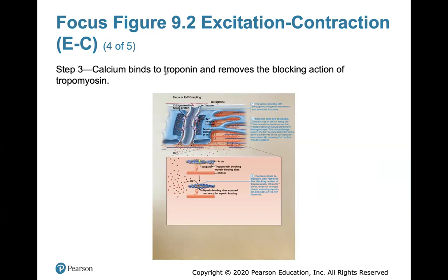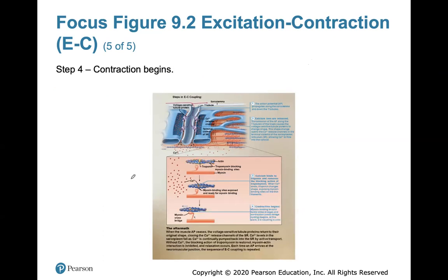Calcium then binds to troponin — the yellow protein on the actin — which removes the blocking action of tropomyosin. Tropomyosin are long spaghetti-like strands blocking the myosin binding sites on the actin. When calcium binds to troponin and removes that block, the myosin heads can reach up and bind to the actin because the sites are free. When the myosin heads bind to the actin, that forms a crossbridge, and then the myosin slides the actin past it.